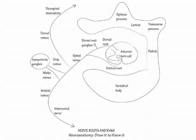Sympathetic ganglia form two long chains that flank the vertebral column. The sympathetic cell bodies lie within the intermediolateral cell column of the spinal cord and project to the paravertebral sympathetic chains.